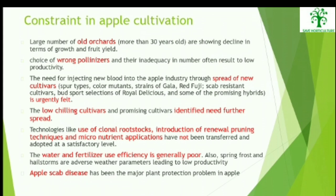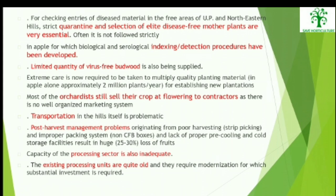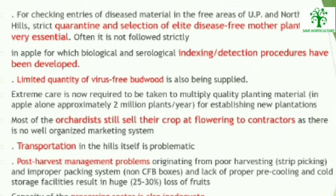Constraints in apple cultivation: a large number of old orchards are showing decline in growth and fruit yield. Choice of wrong pollinizers and their inadequacy in number often results in low productivity. Low-chilling and promising cultivars are to be identified for further spread. Technologies like clonal root stocks, renewal pruning techniques, and micronutrient applications have not been transferred and adopted at a satisfactory level. Apple scab disease has been a major plant protection problem. Limited quantity of virus-free budwood is also being supplied. Transportation in the hills is problematic, and the capacity of the processing sector is also inadequate. Existing processing units require modernization with substantial government investment.